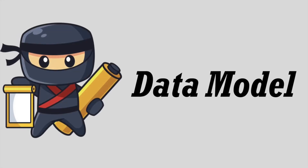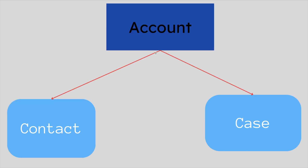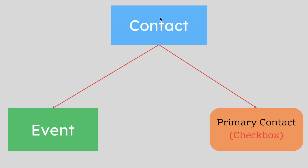Now before writing code, it is very important to understand the architecture of all objects that we are going to use today. So let's first begin with the data model. In today's scenario, Account, Contact, and Case will be the major objects. Both Contact and Case are the child objects and Account is the parent object. On the Contact object, there is a checkbox field called Primary Contact which determines whether a contact is a primary contact or not. There is also an Event object which is the child of Contact.